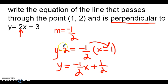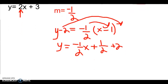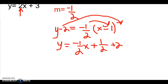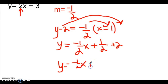When this negative two moves over to the other side we change the sign, so it becomes plus two. All that's left is to combine like terms, so we have y equals negative one half x, and then we combine one half plus two for two and a half. There's your equation of the perpendicular line.